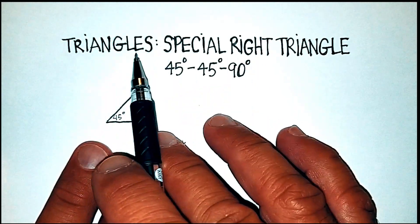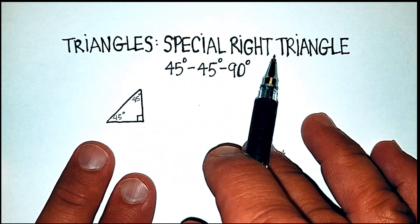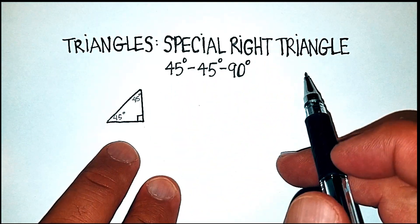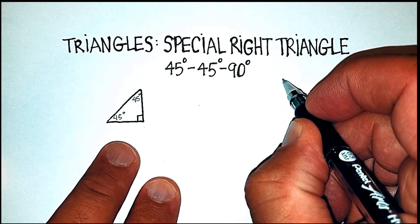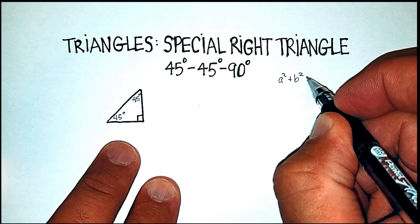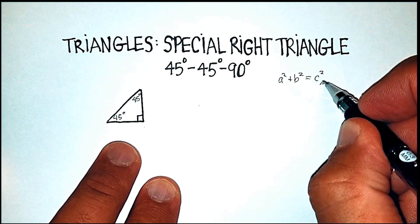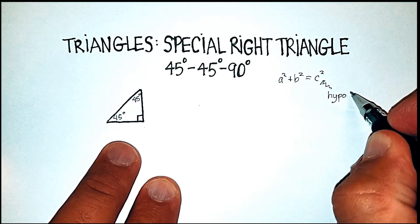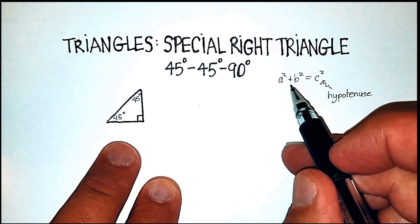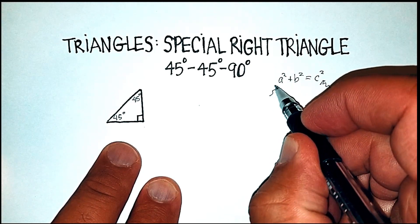Let's talk a little bit about right triangles in general, any kind of right triangle. We know that there is a theorem called the Pythagorean theorem that says that a squared plus b squared will equal c squared, where c is the hypotenuse of the triangle, and a squared and b squared are the legs of the triangle.